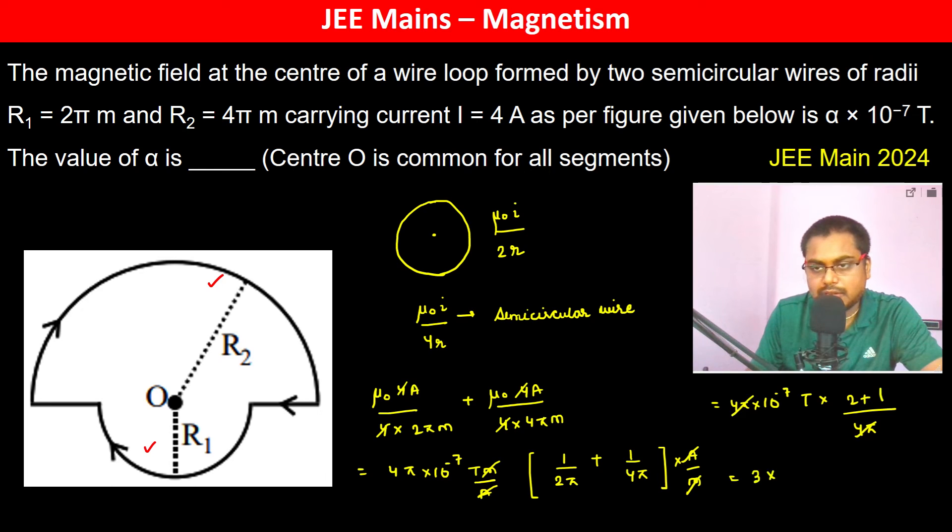So therefore the value of alpha becomes 3 because it's alpha into 10 to the power minus 7 tesla. Thank you.